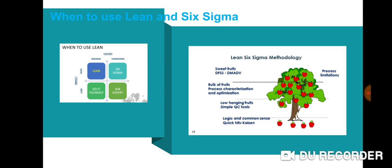Another upper layer is the bulk of fruits: process and characteristic, and we need optimization. We need to do that—that means we need to use some kind of process improvement.